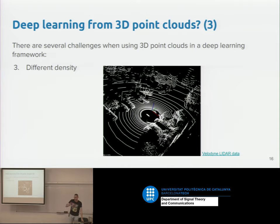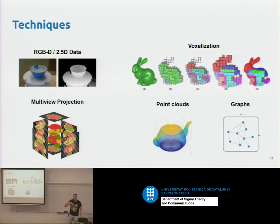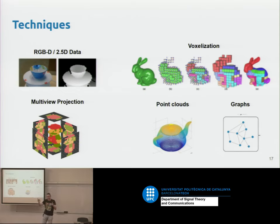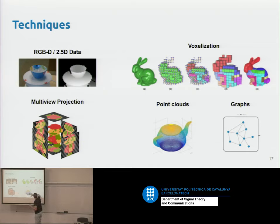Given these limitations, there are several approaches to analyze 3D scenes with neural networks. I'll cover five: using two-and-a-half-D data, voxelization, projection, and directly working with point clouds.